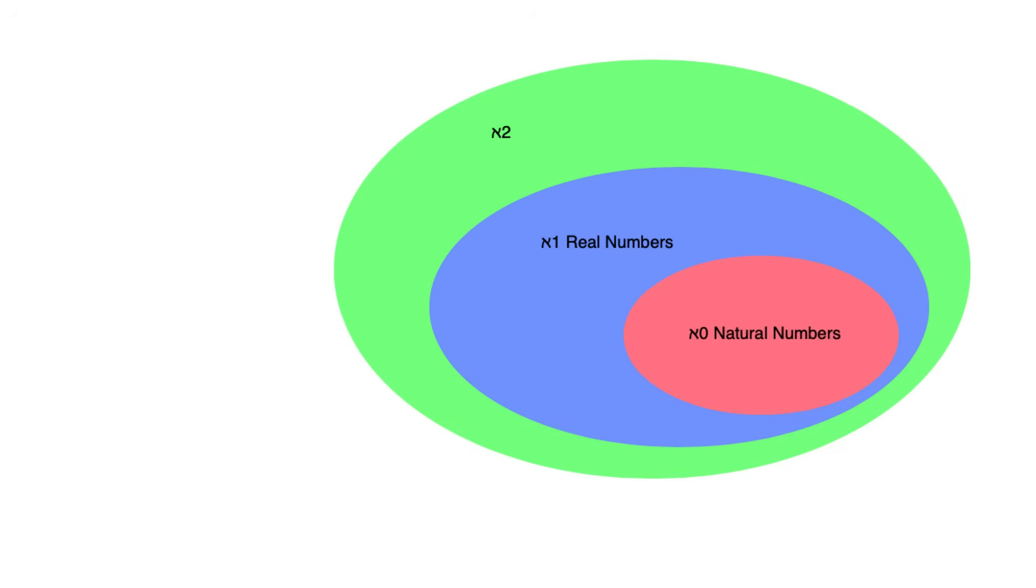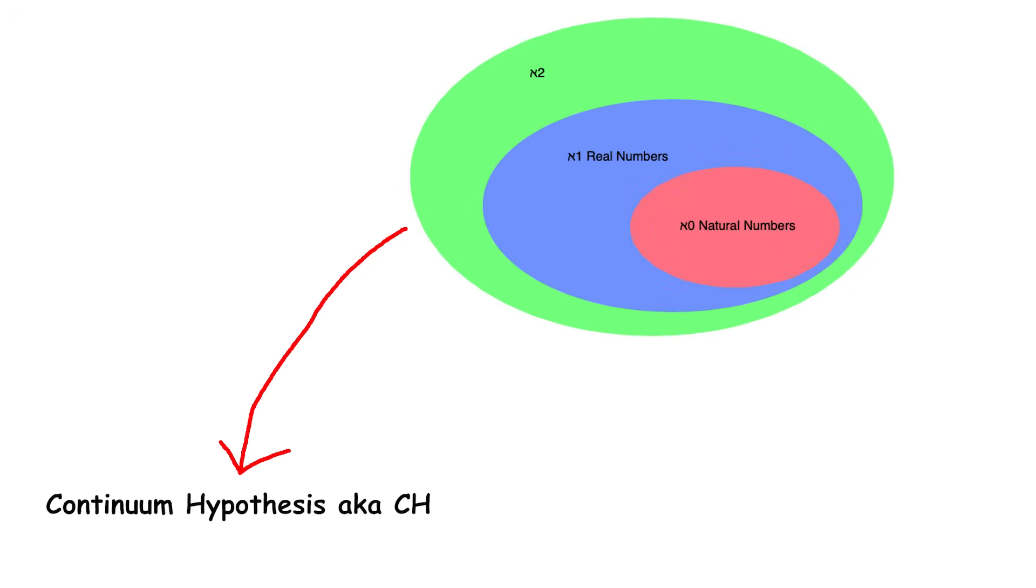But is the size of the real numbers the next larger size of infinity? This question is known as the Continuum Hypothesis, also known as CH. If CH is true, then the real numbers are the second infinite size, and there is nothing in between the natural numbers and the real numbers. If CH is false, then there are other infinite sizes in between the natural numbers and the real numbers.